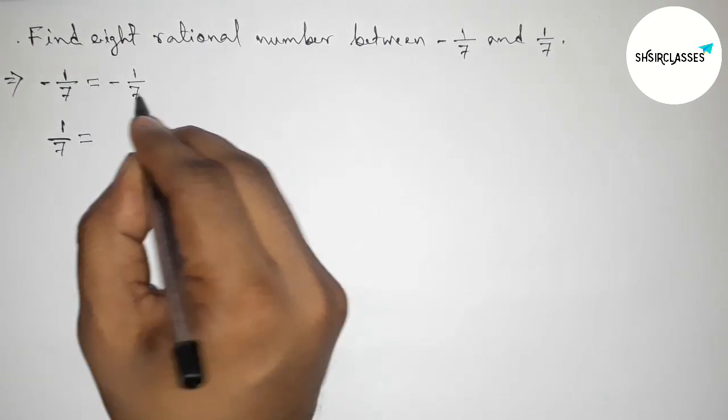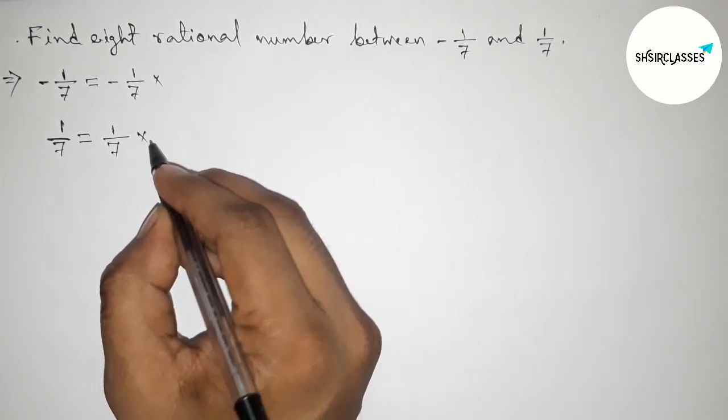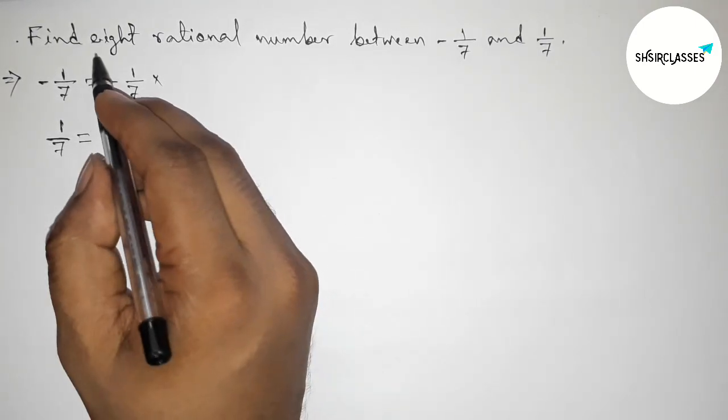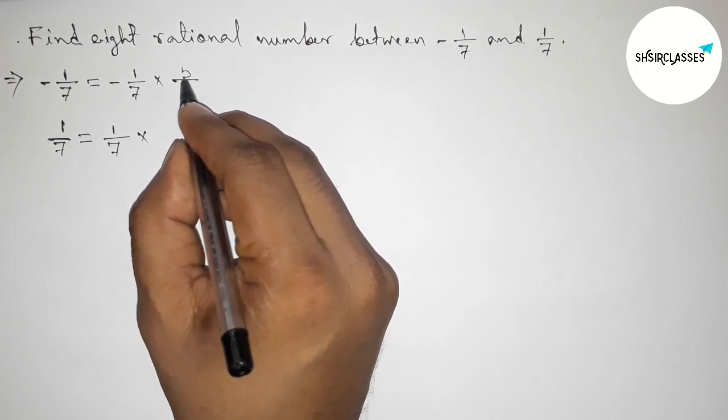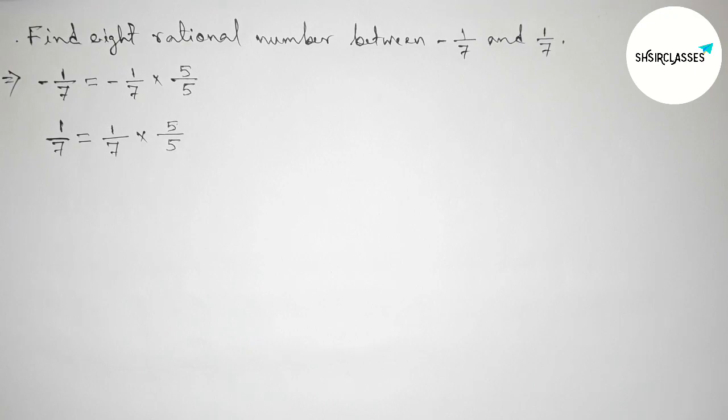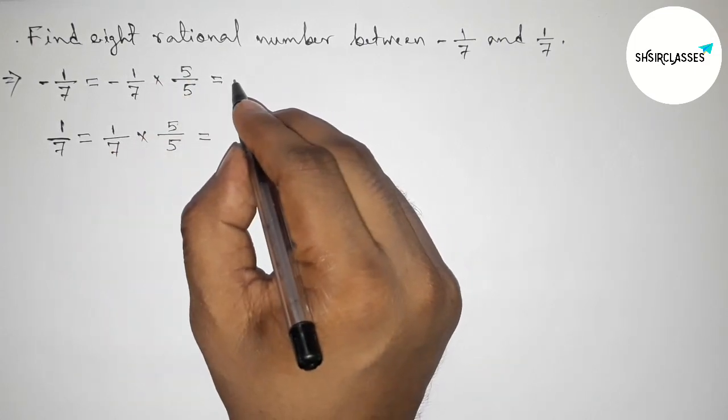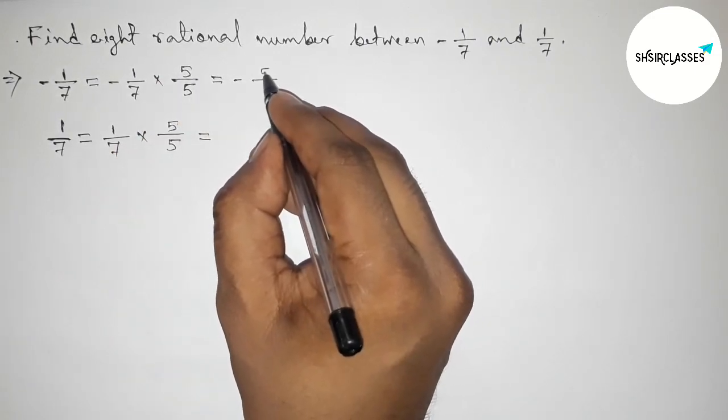here. For 8 rational numbers, we have to multiply by a number up and down. So that is 5. Taking 5 up and down. So now simplifying this, here this is -